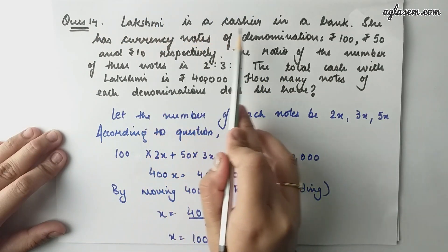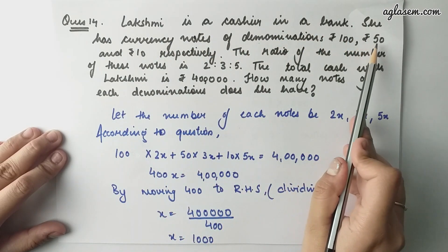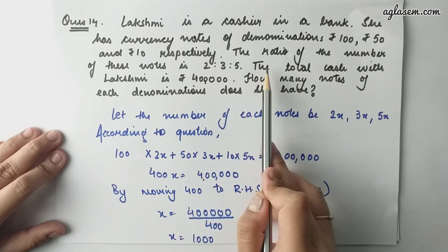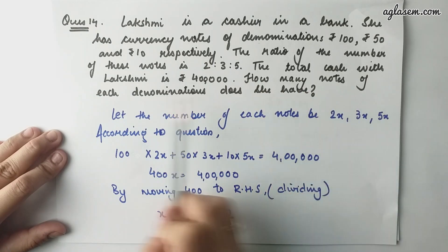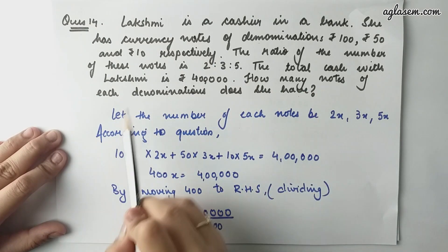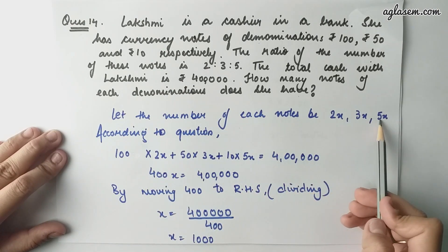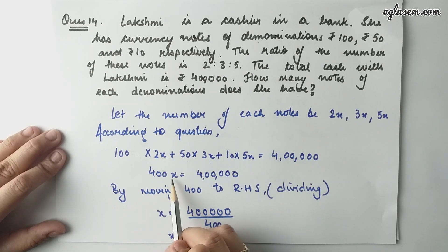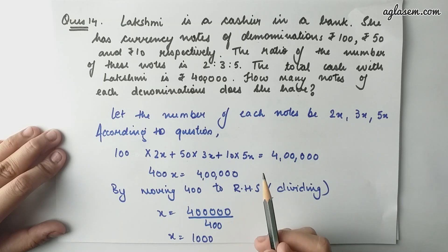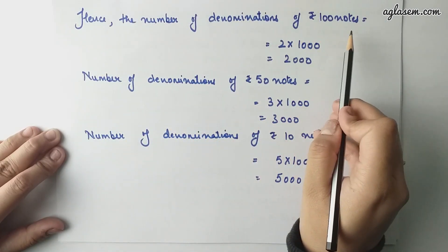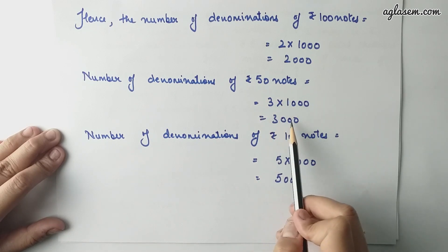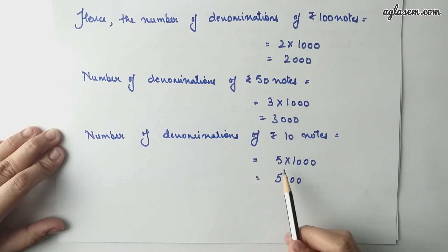Question number 14: Lakshmi is a cashier in a bank. She has currency notes of denominations Rs. 100, Rs. 50, and Rs. 10 respectively. The ratio of the number of these notes is 2:3:5. The total cash with Lakshmi is Rs. 4 lakh. How many notes of each denomination does she have? Let the number of each note be 2x, 3x, and 5x. According to the question, 100 times 2x plus 50 times 3x plus 10 times 5x equals to 4 lakhs, giving 400x equals to 4 lakhs, so x equals to 1000. Hence, the number of Rs. 100 notes is 2000, Rs. 50 notes is 3000, and Rs. 10 notes is 5000.